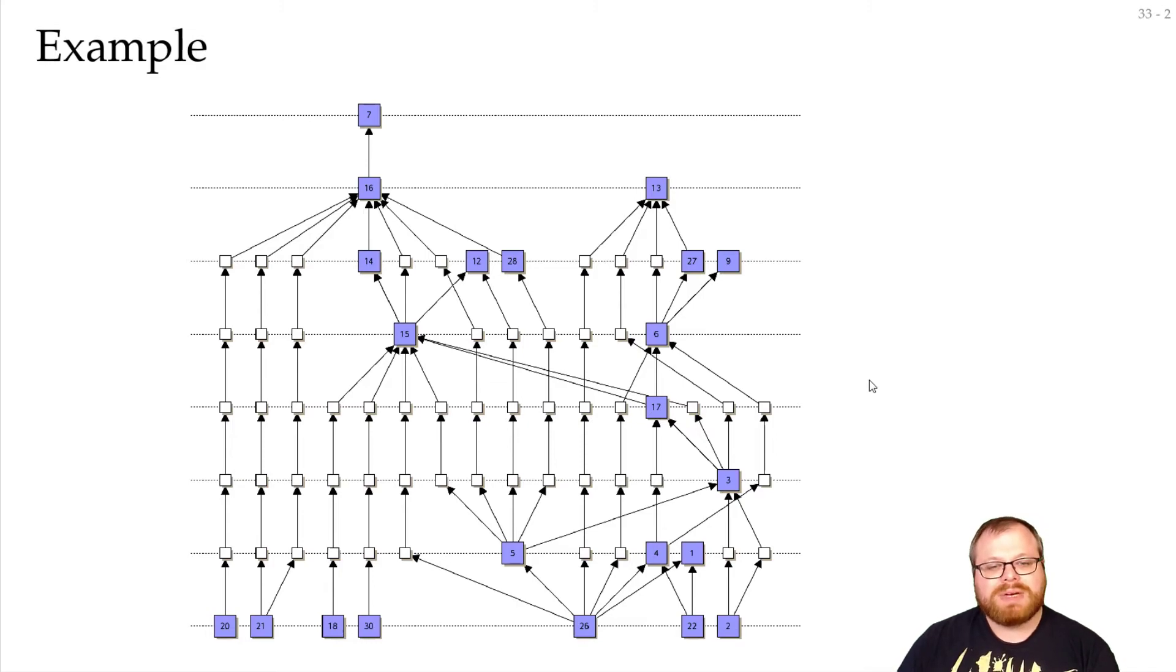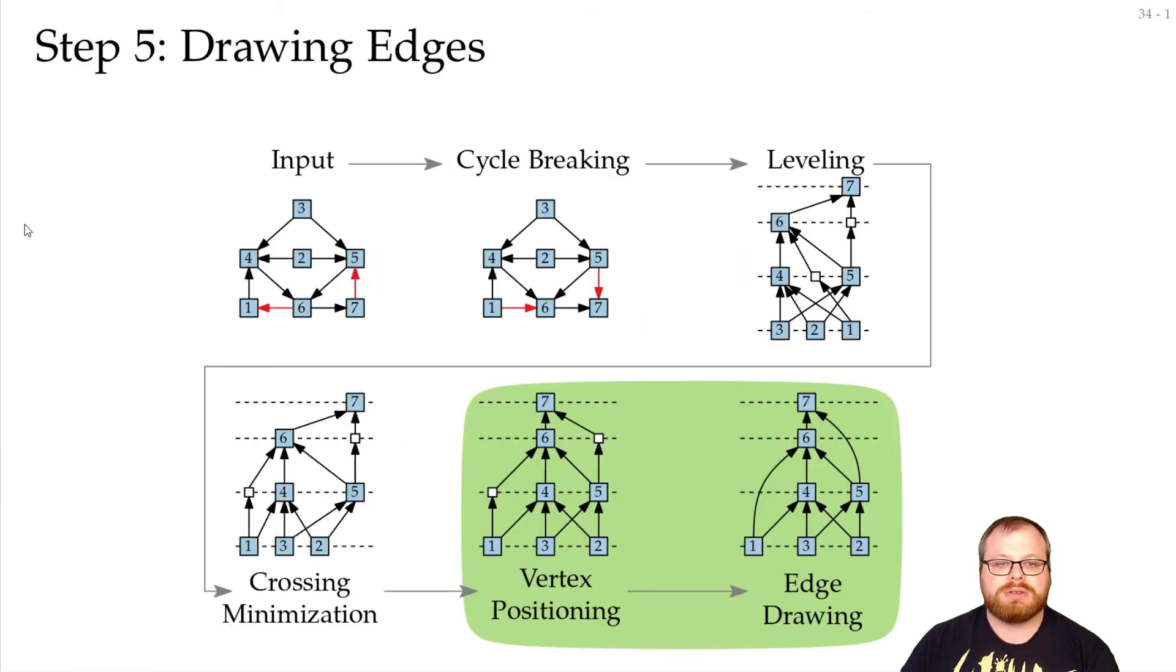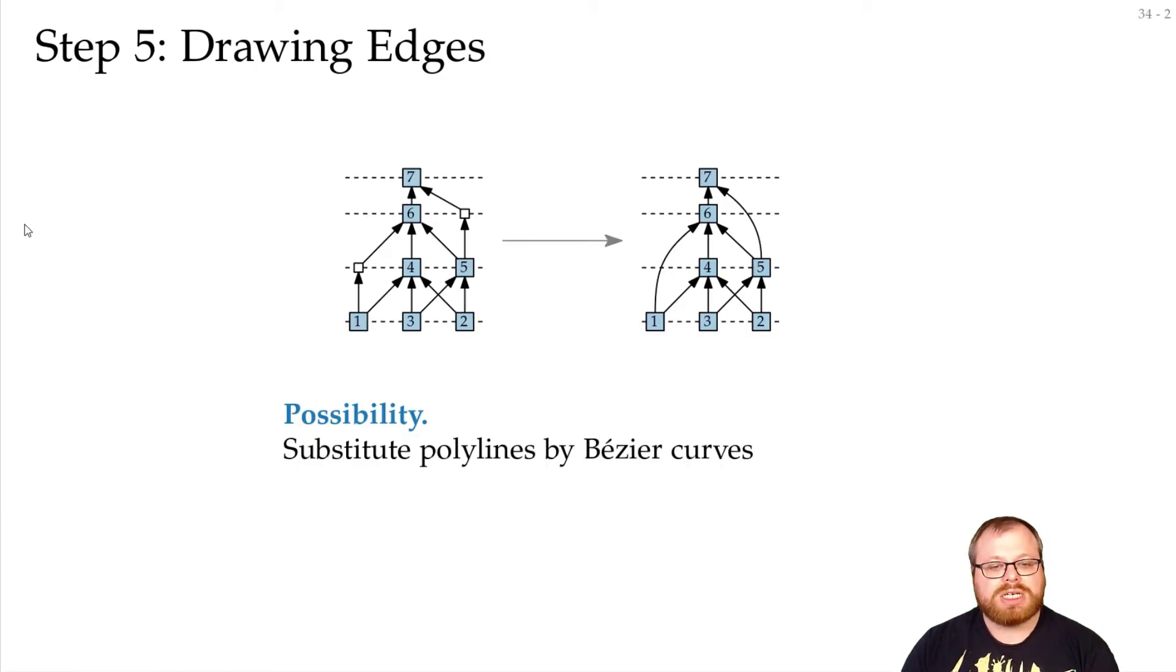Thing is, if you have too many bends, then this might look quite ugly. Or if you have sharp bends, it might look quite ugly. So instead, we can just substitute the polylines with Bézier curves.